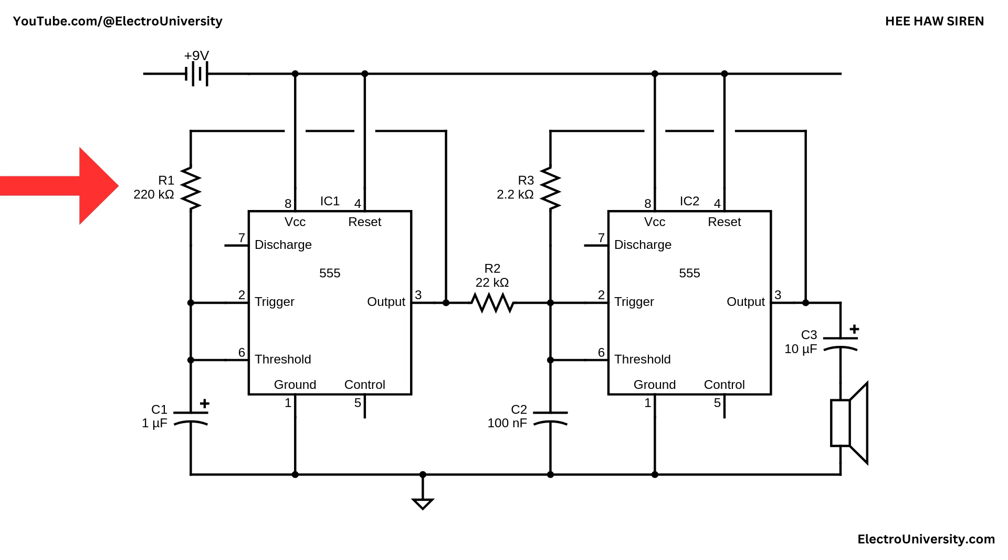It uses a 220,000 ohm resistor and a 1 microfarad capacitor to set its frequency. This IC produces a slow oscillating waveform at its output or pin 3, which is fed into the control circuitry of the second 555 timer.